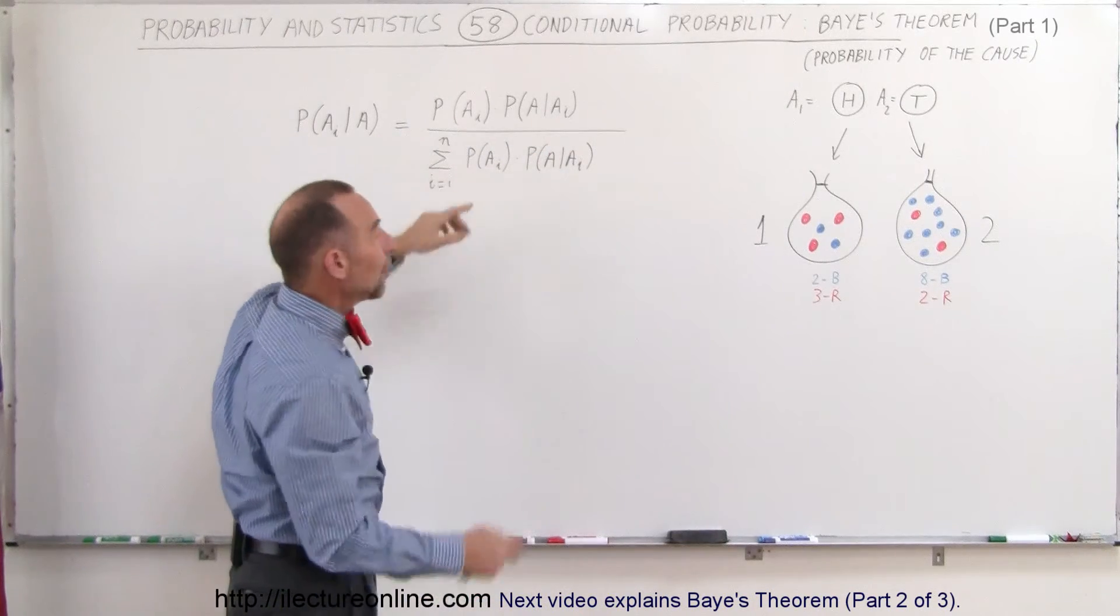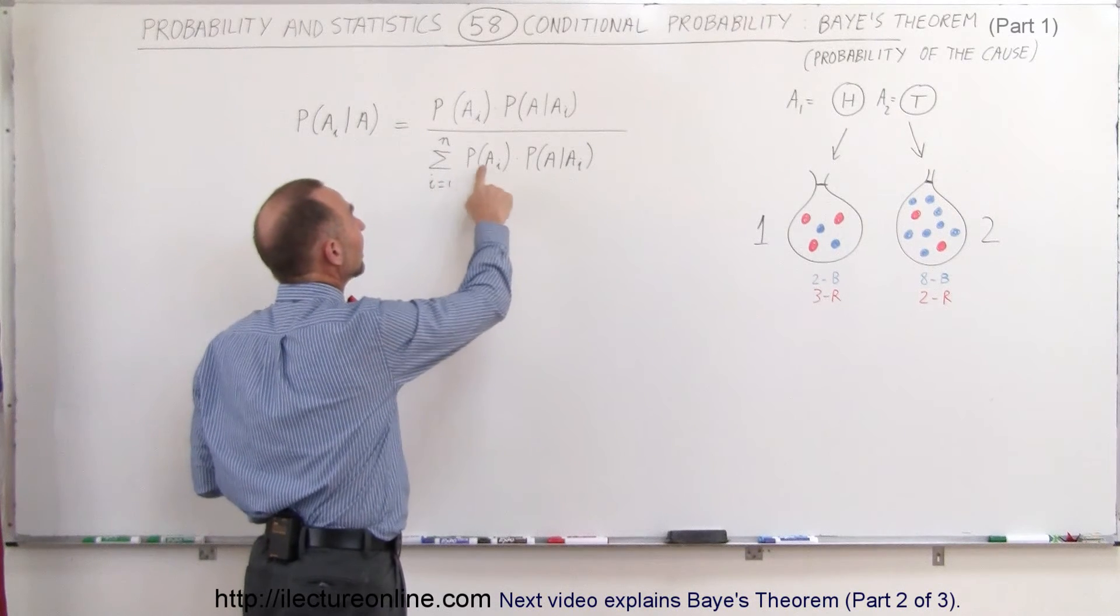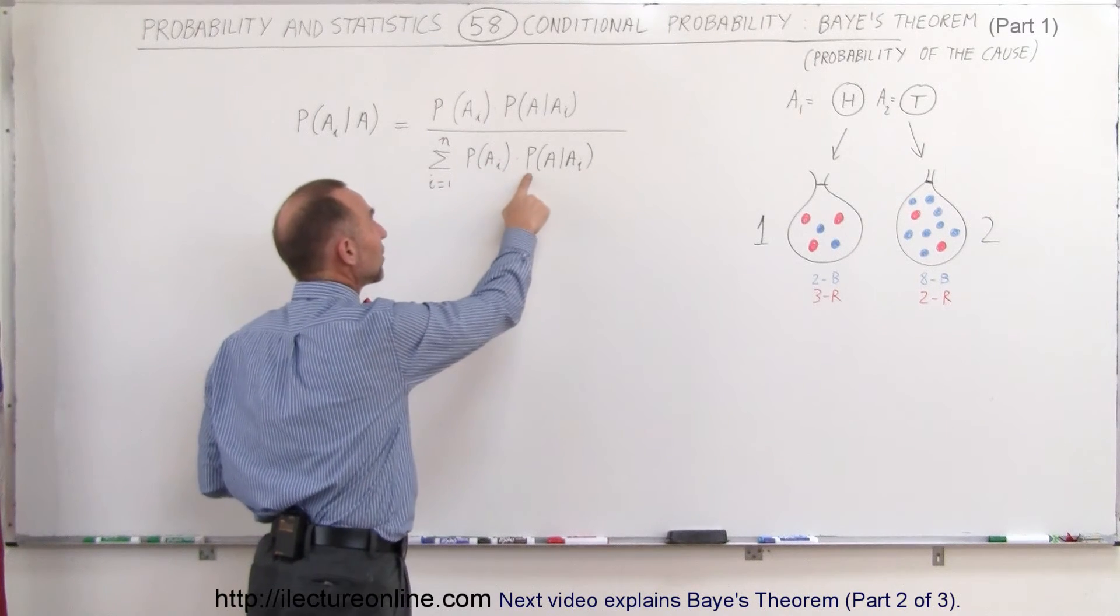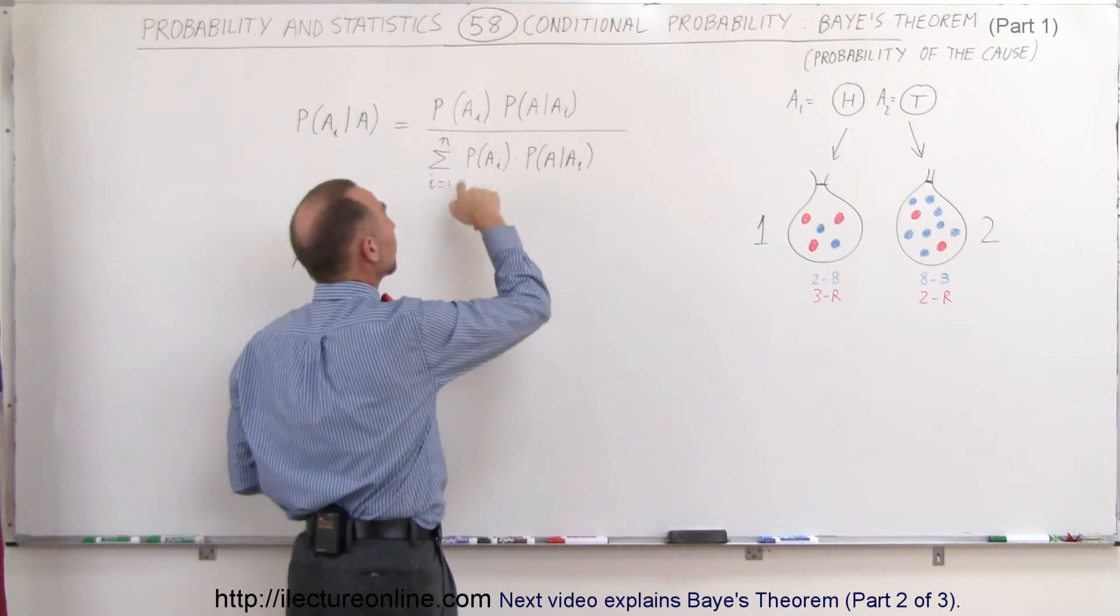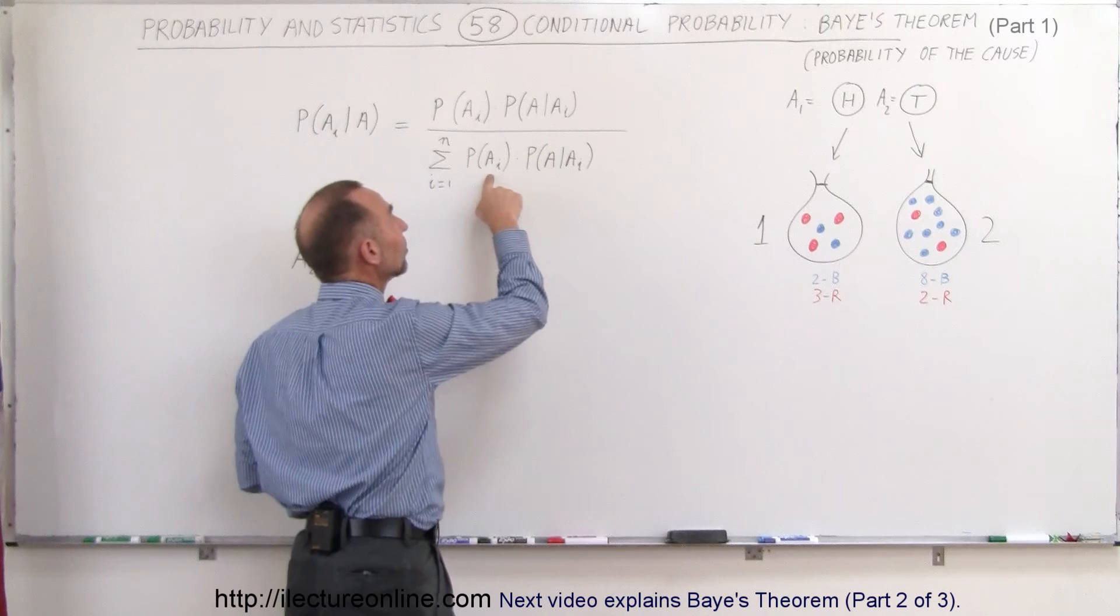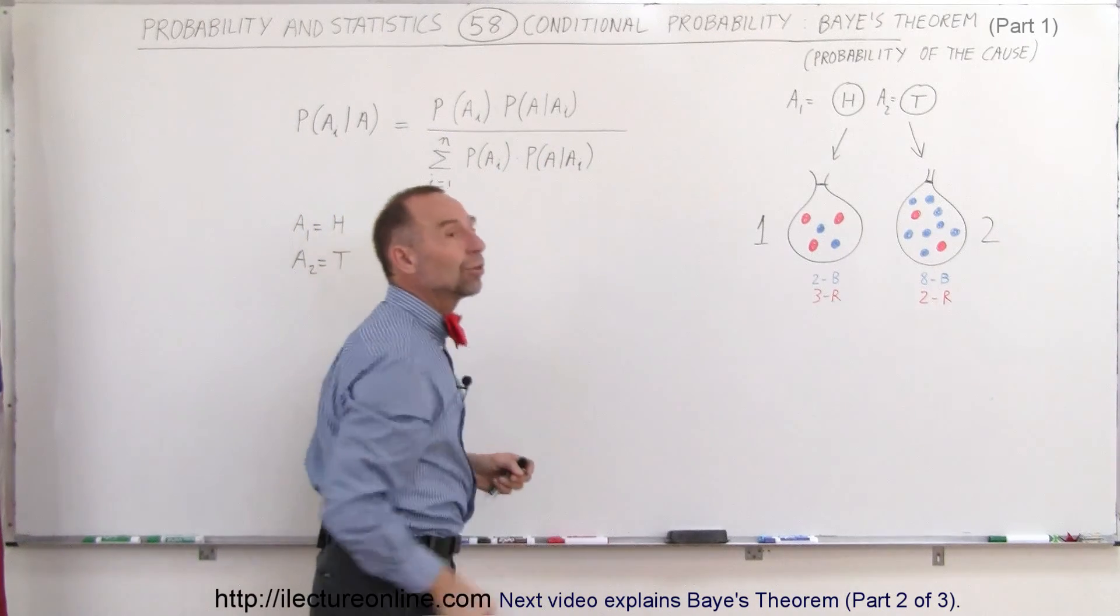divided by, and now we have to sum up all the different possibilities, the probability that we threw heads times the probability that we pulled a red marble, provided we threw heads, plus the probability that we threw tails, times the probability that we pulled a red marble, provided that we threw tails.